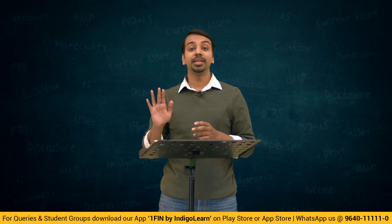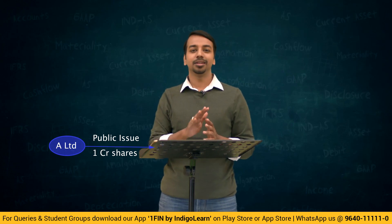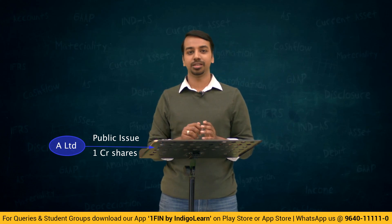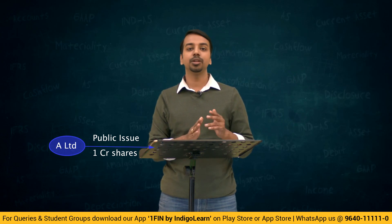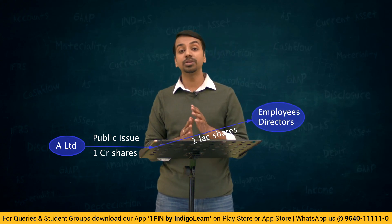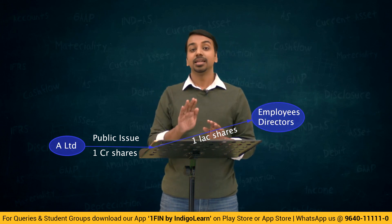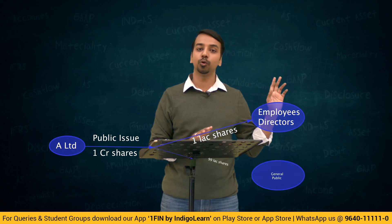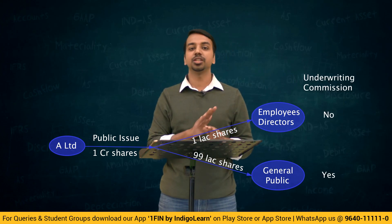One important point: A Limited issued 1 crore shares, but suppose employees and directors agreed to take 1 lakh shares internally. That means only 99 lakh shares are issued to the public. The guidelines are clear: underwriting commission is payable only on the 99 lakh shares issued to the public. On the portion not issued to the public — such as shares taken by employees and directors — underwriting commission is not payable.